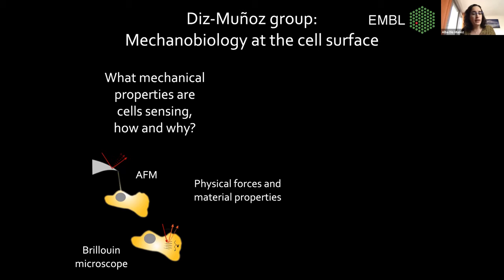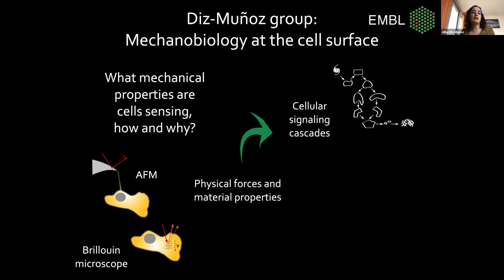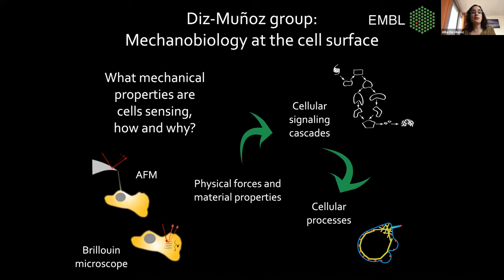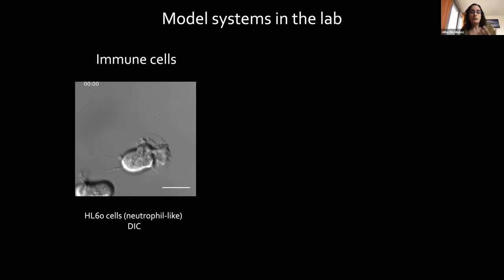In the lab, we are really focused on the cell surface, trying to understand what mechanical properties cells are sensing, how and why they do that. I will show you two stories today. In one, we make extensive use of our atomic force microscope to measure mechanical properties. In the other, we've been working hard to implement Brillouin microscopy for live cell imaging. The stories are focused on zebrafish and on mouse embryonic stem cells, though we also have quite a bit of work using immune cells.